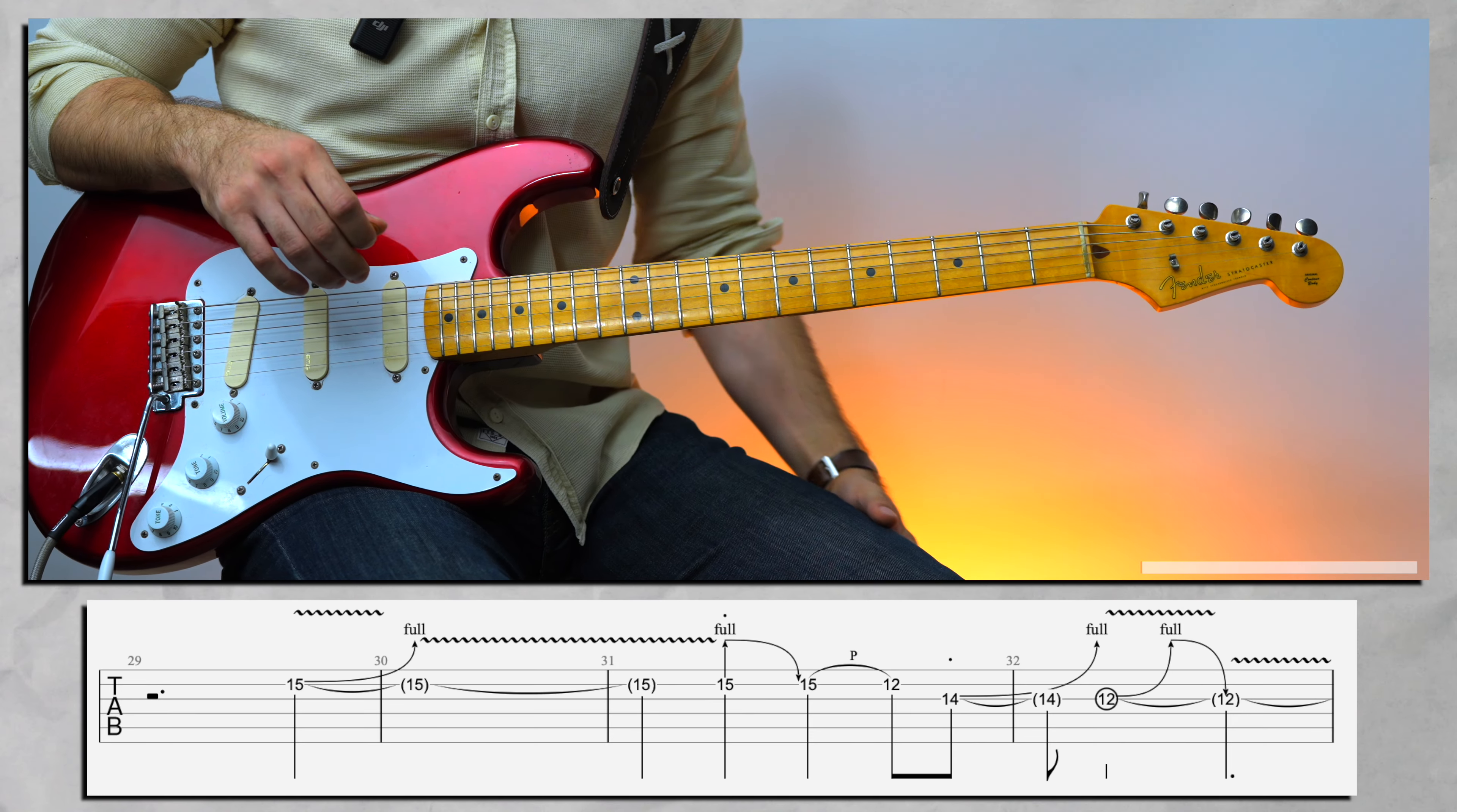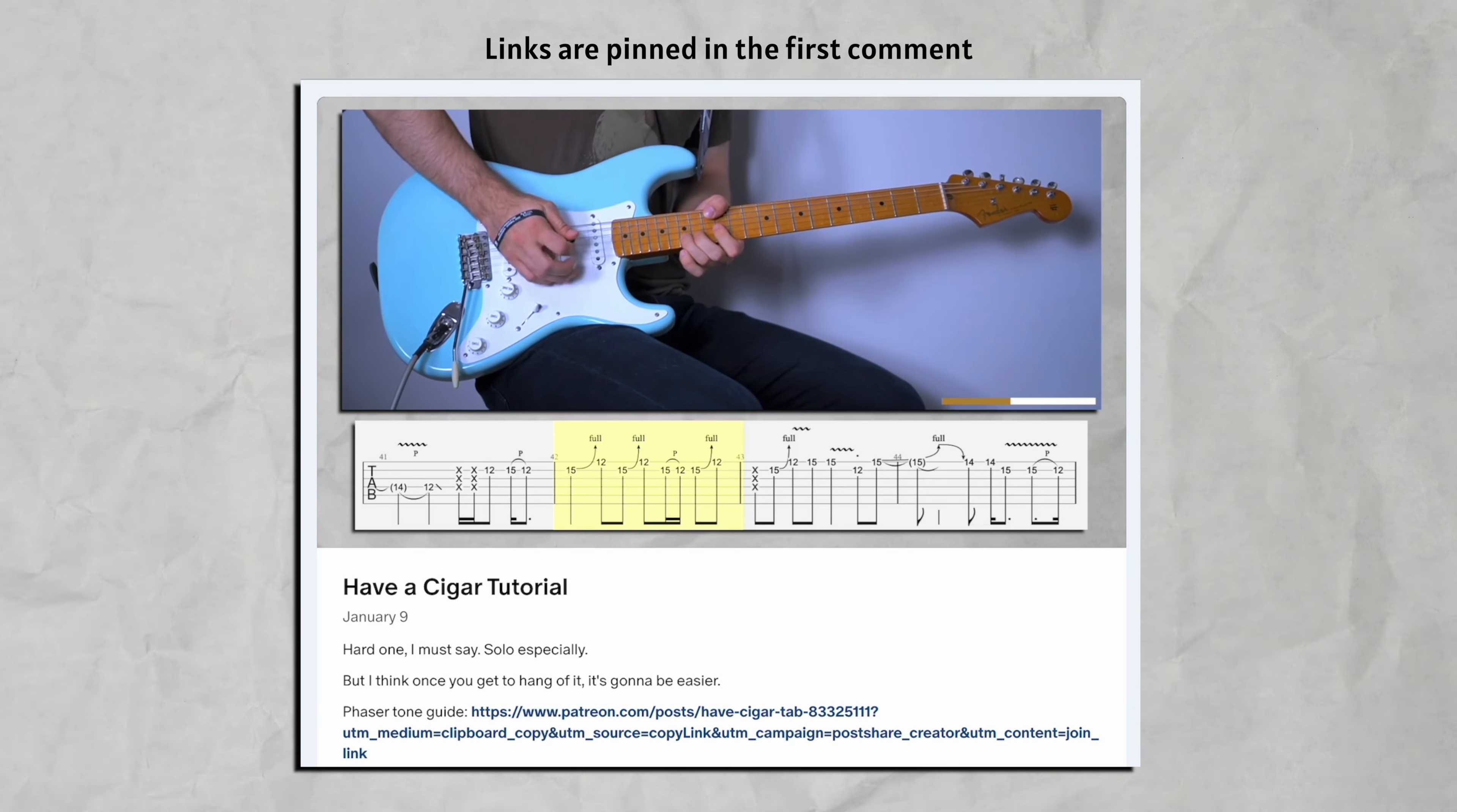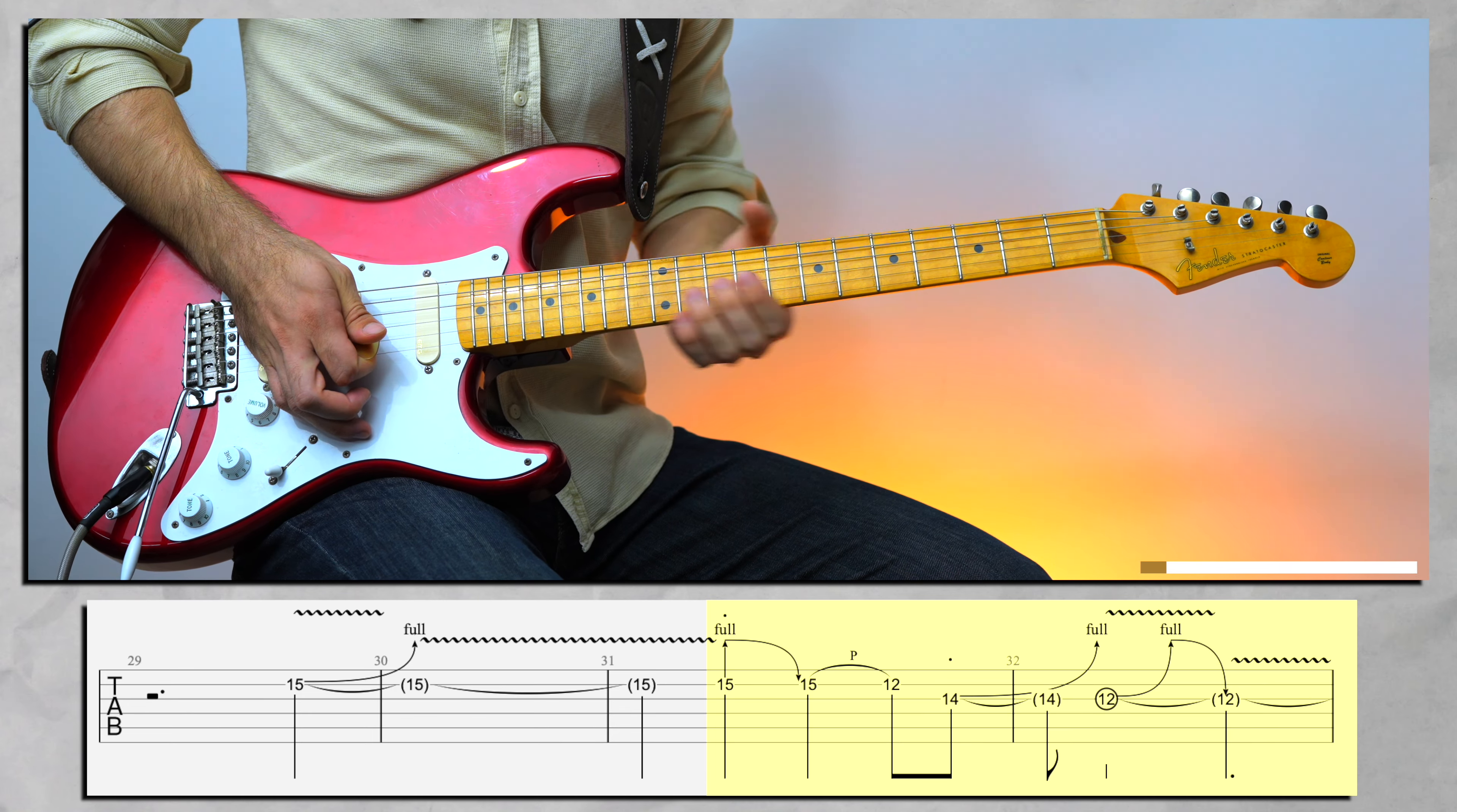All right, so Have a Cigar is like I said is not the Gilmour solo. I really like it, it's a very unique solo. It repeats a lot of stuff too, but it repeats in a good way. I mean you can just learn whole song with tabs at my Patreon if you're interested. I'm gonna talk about these.